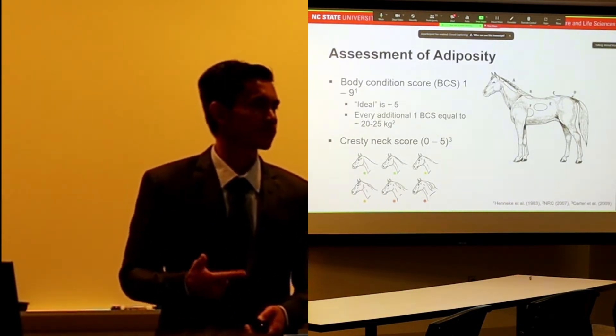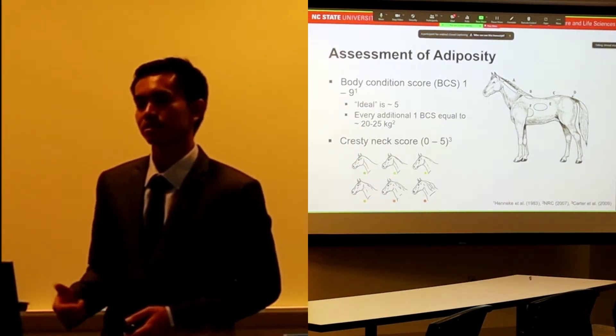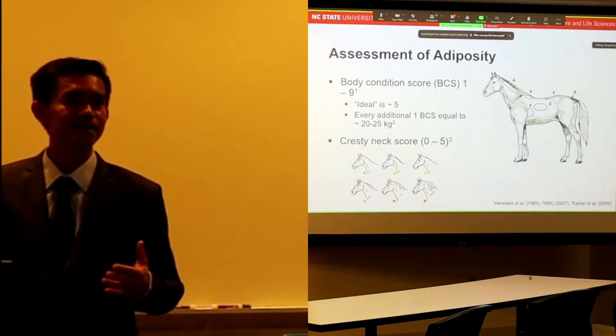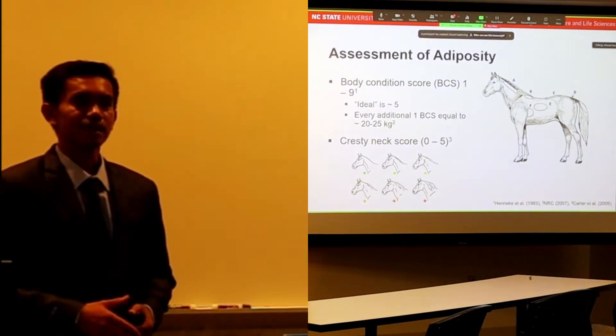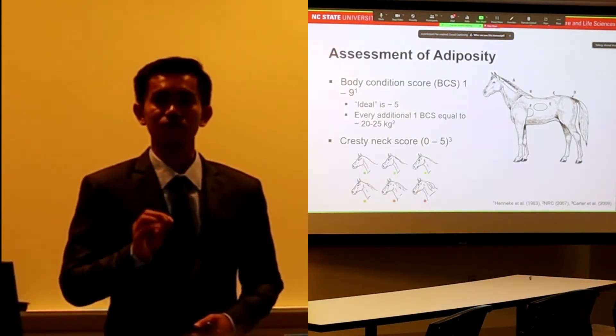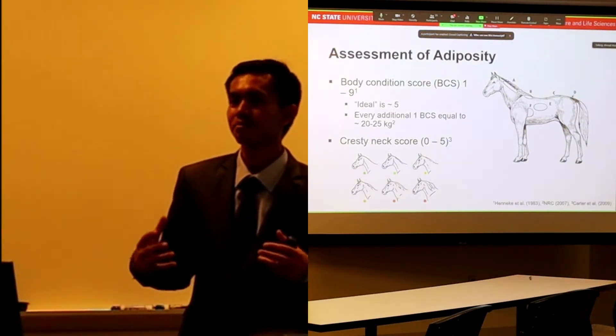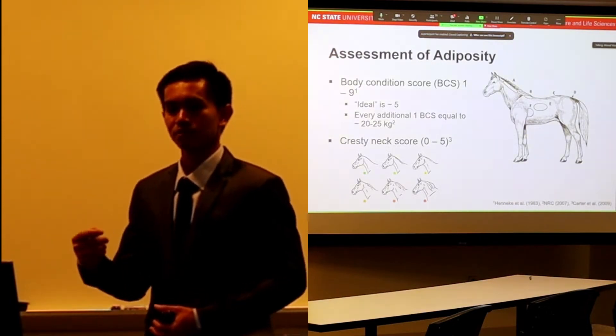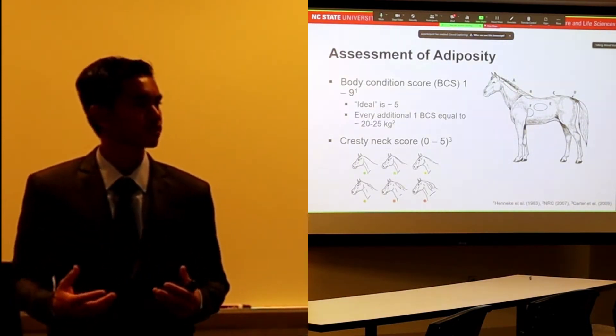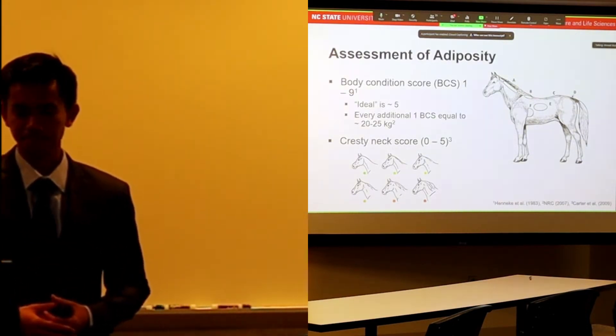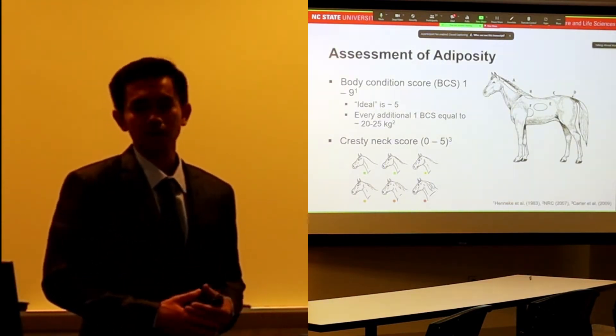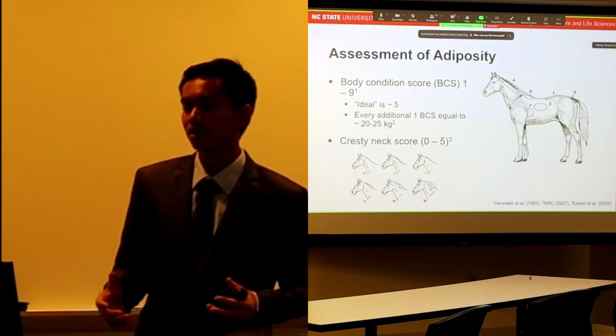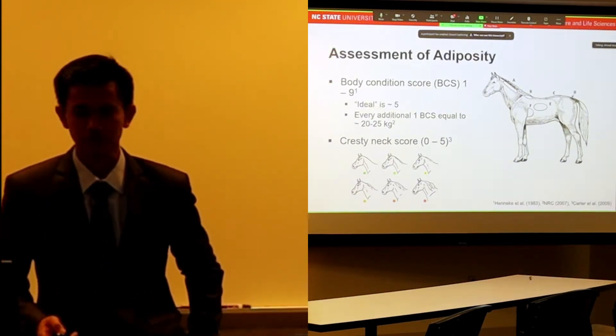Body condition score assesses adiposity based on fat deposits in a number of regions shown in the picture, assigning a score from 1 to 9, with 1 being emaciated and 9 being grossly obese. At ideal condition we'd say a 5, and every increase or decrease of one body condition score represents an increase or decrease in body weight of around 20-25 kg.